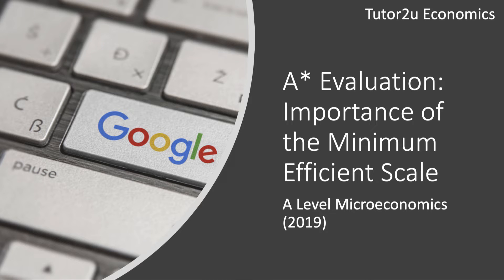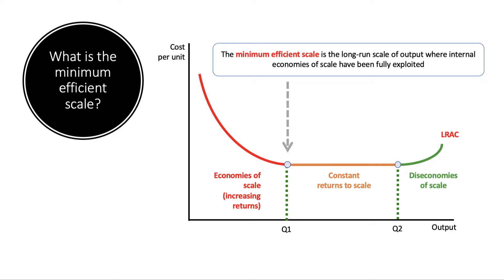In this video we'll take a look at the importance and significance of the minimum efficient scale of production. What is the minimum efficient scale? It's a concept in microeconomics which becomes quite important when discussing the theory of the firm and market structures. It's defined as the long-term scale of production, or the scale of output, where a firm benefits from all of the economies of scale available to it.